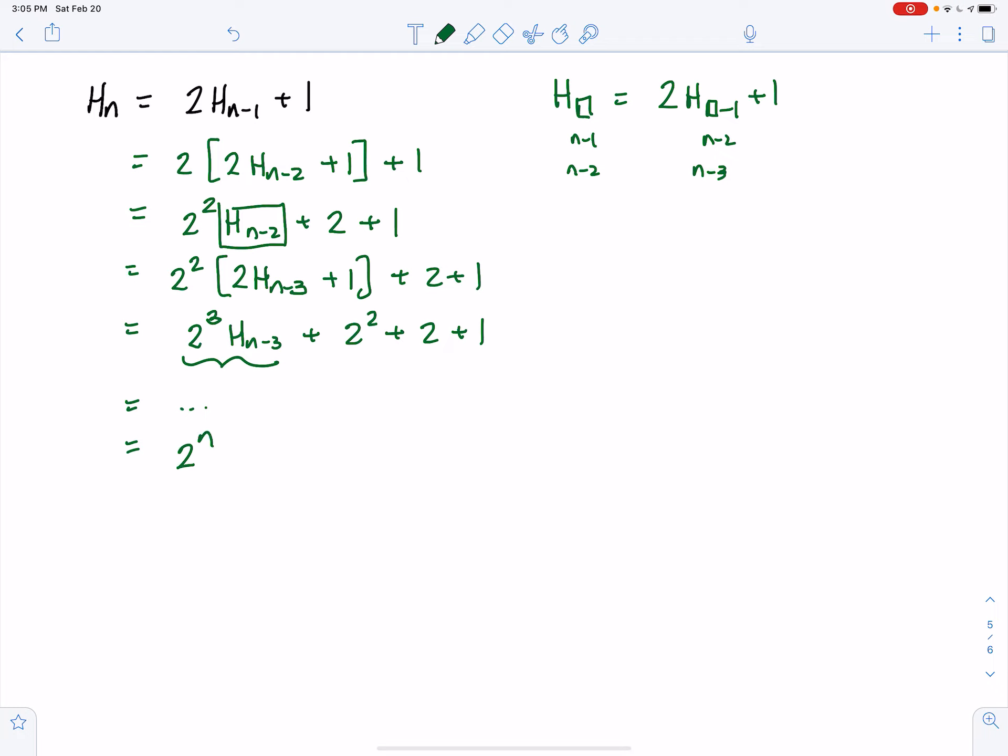So that's 2^n times h_{n-n} plus, well, this power is always 1 behind, so that's 2^(n-1) plus 2^(n-2) plus all the way down to 1.